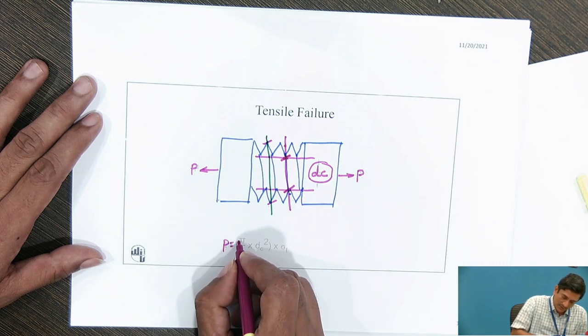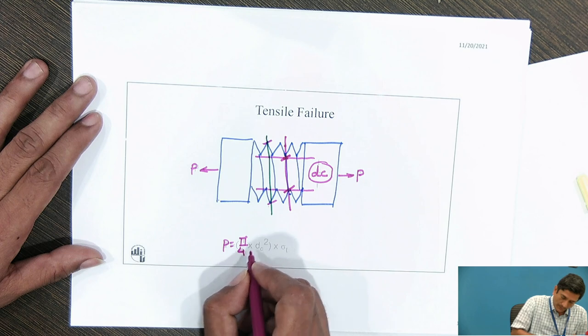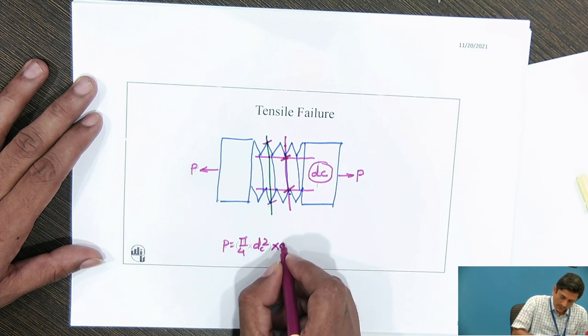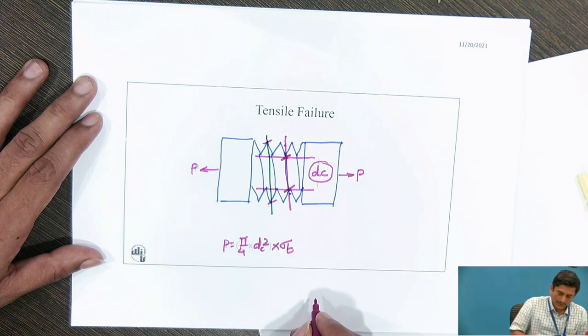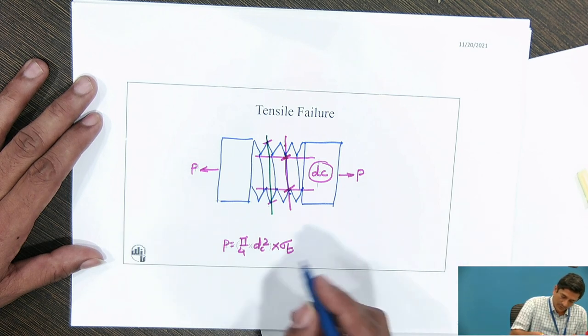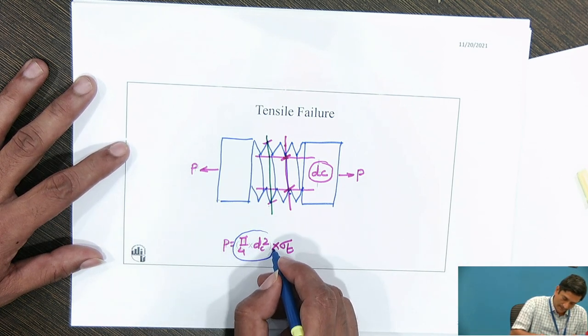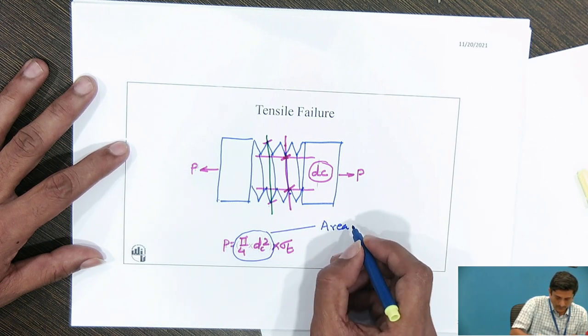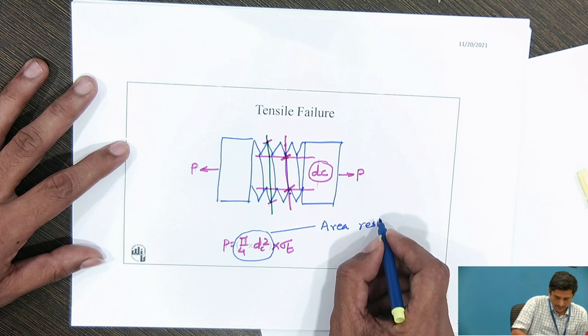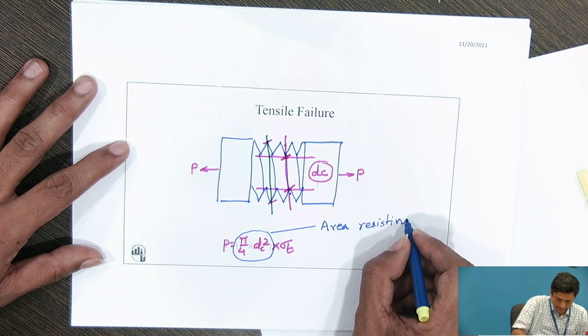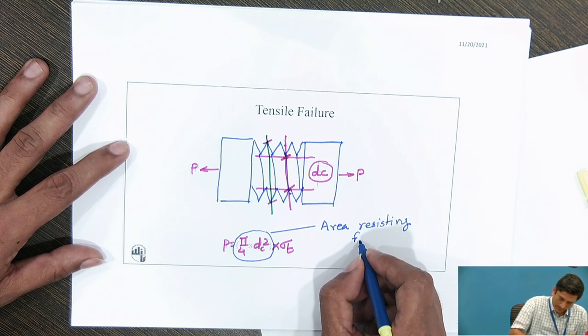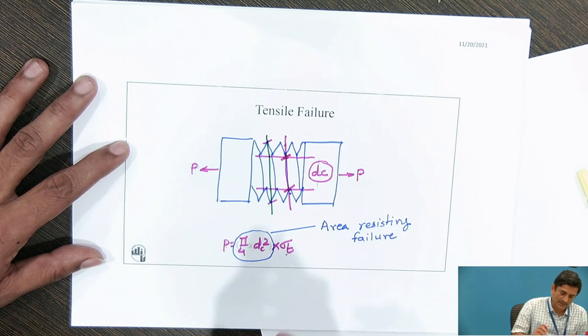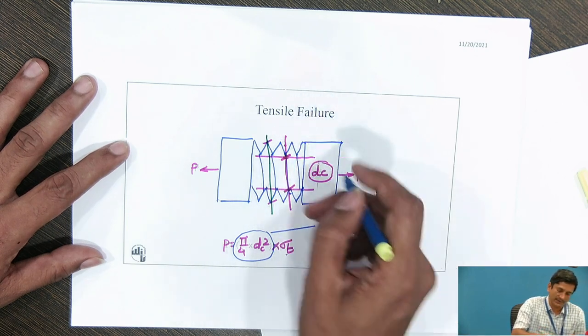Our equation is P equals pi by 4 dc square into sigma t. The first term is the area resisting the failure and second is the corresponding stress. Here, I am taking tensile failure.